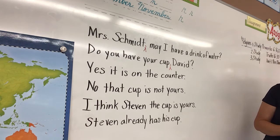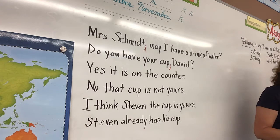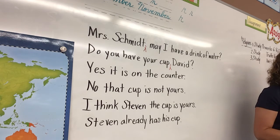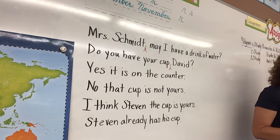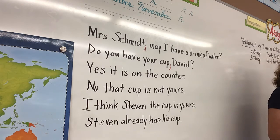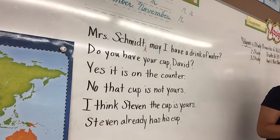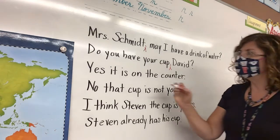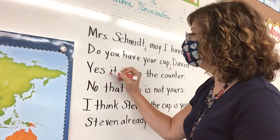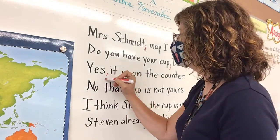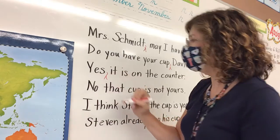What about the next one? Yes, it is on the counter. Alice. Yes, it is on the counter. After yes — yes or no at the beginning of the sentence, you need a comma. Insert that comma.